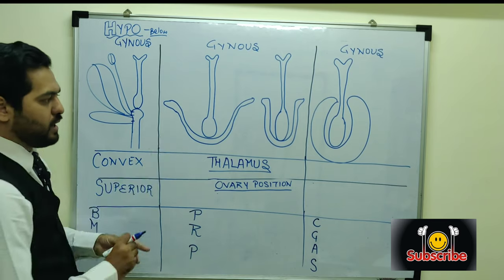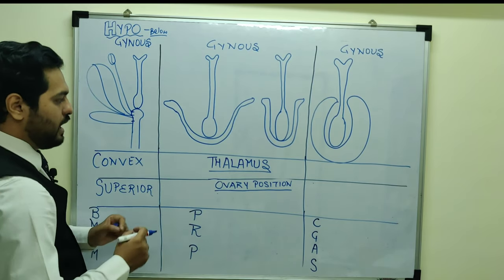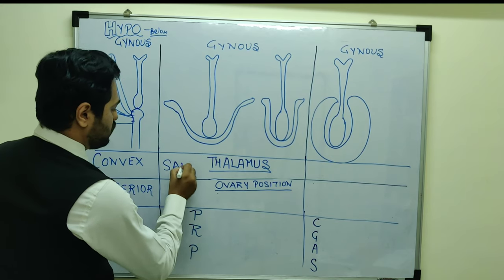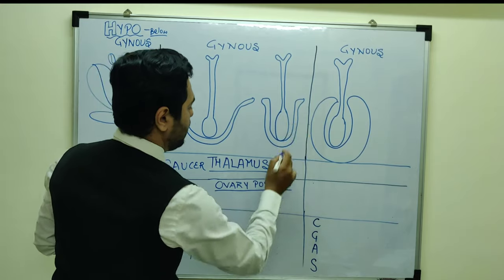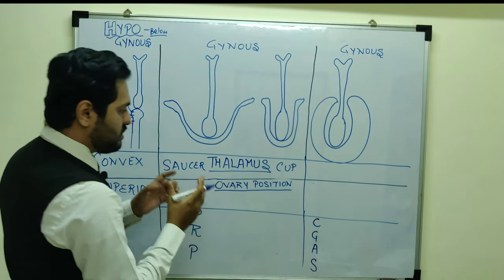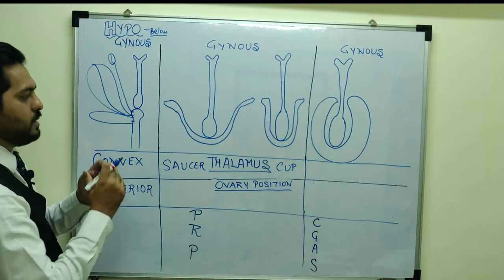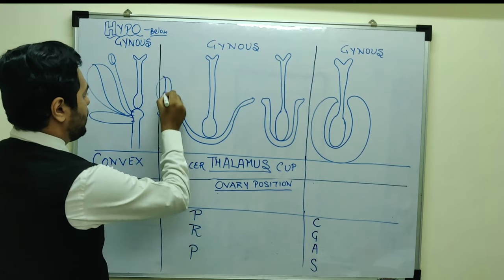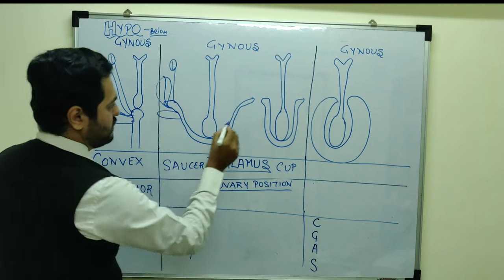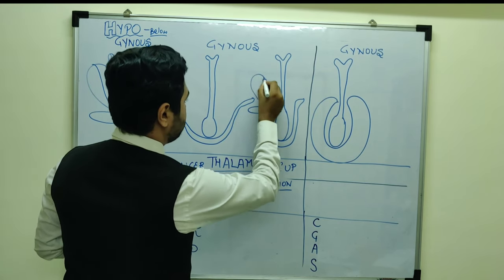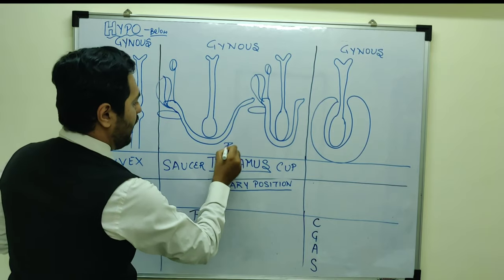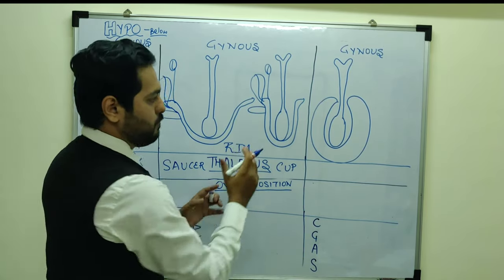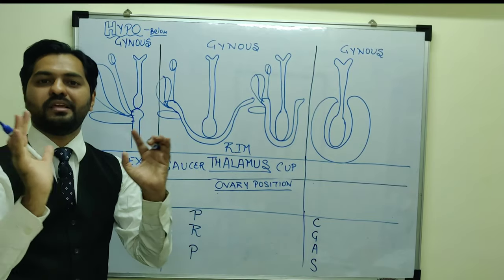The second diagram I have represented alongside because here the shape of the thalamus can either be saucer shaped or cup shaped. Whenever the thalamus shape is saucer or cup shaped, in comparison to gynoecium, the sepals, petals, and stamens are present at the rim of the saucer or at the rim of the cup — meaning they are present at the circumference or periphery.